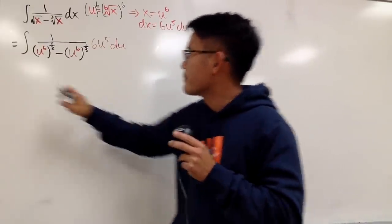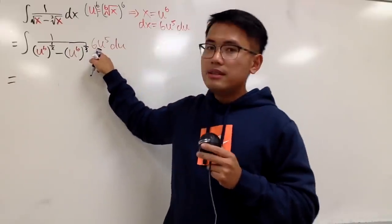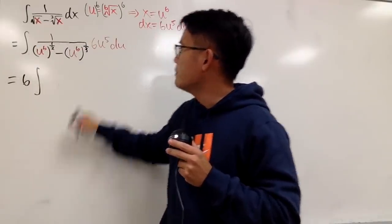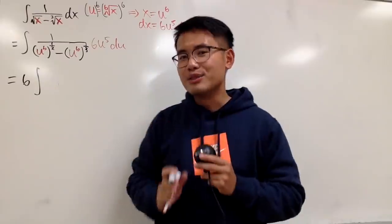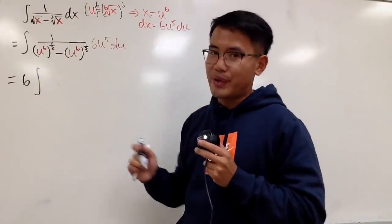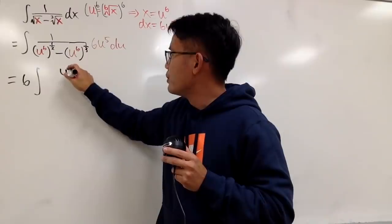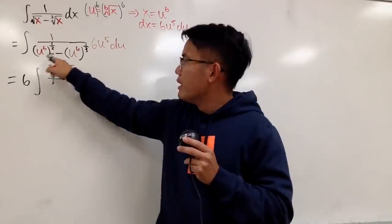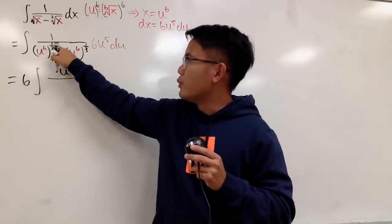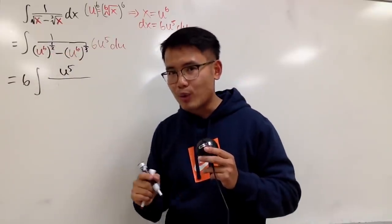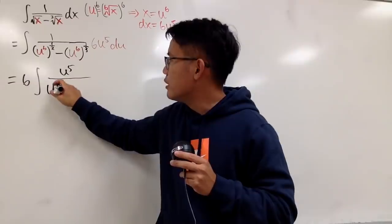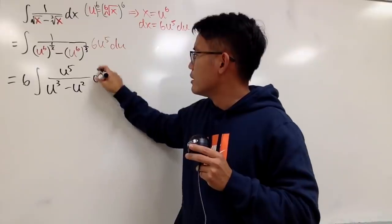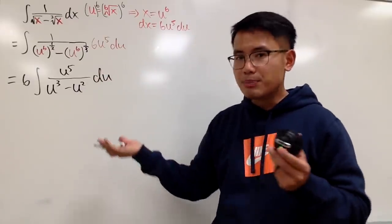Let's continue. The 6 is a constant multiple, so let's put it in front. We have the integral with u^5 on top. For the denominator, (u^6)^(1/2) is u^3, and (u^6)^(1/3) gives us u^2. So the denominator is u^3 minus u^2. And that's pretty much it — we now have a rational function inside.